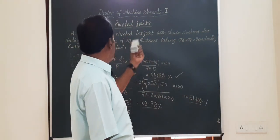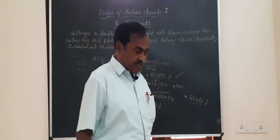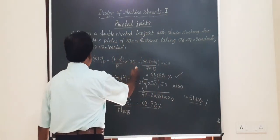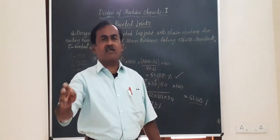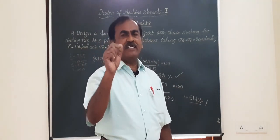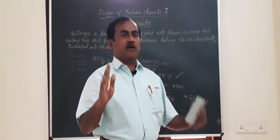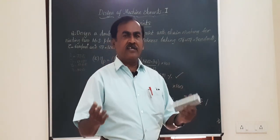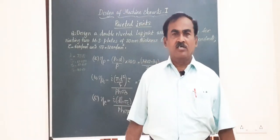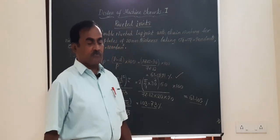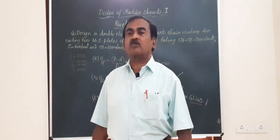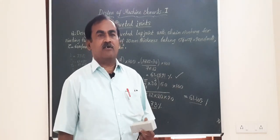Friends, I am confident all of you have followed the procedure for designing a double riveted lap joint with chain riveting. One note: if the same problem uses zigzag riveting instead of chain riveting, nothing changes except the transverse pitch, which becomes PT = 0.33P + 0.67d. Everything else remains the same. If you are happy with this presentation, do subscribe, share with your friends — subscription costs nothing. Have a wonderful day. This is Dr. M.H. Channaya signing off.